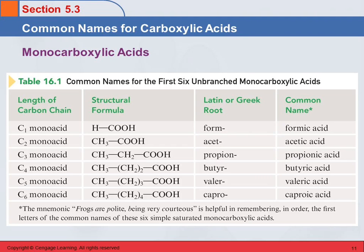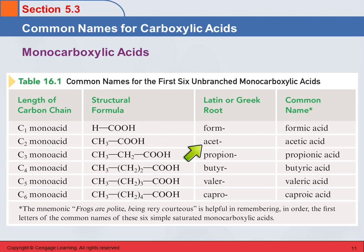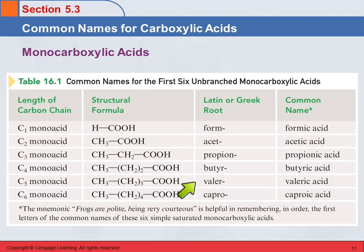We've encountered a couple of these roots before. We've got form for one carbon, acet for two, propion for three, butyr for four. And then we also have special names for five and six: valer and capro.